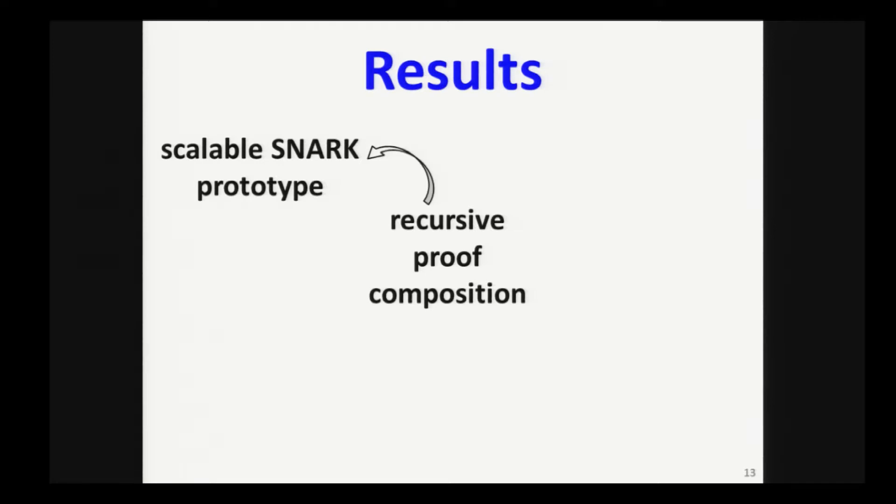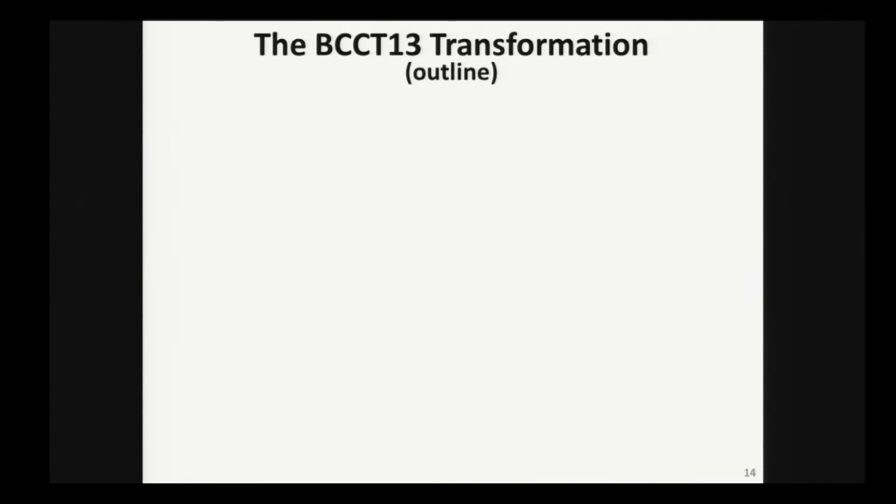Let me tell you what we do. So in this paper, we put forward the first working prototype of a scalable SNARK. We do so by following this, by realizing this transformation. So along the way, we also demonstrate for the first time recursive proof composition in practice. The main enabler behind our work is a new technique that we call cycles of elliptic curves that allows us to circumvent significant overheads that previously were preventing scalable SNARKs from being realized in practice. So that's our results, and now I want to move on and tell you about, remind you at a very high level what the transformation looks like so I can point out the difficulties.